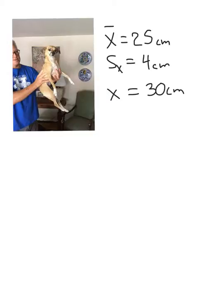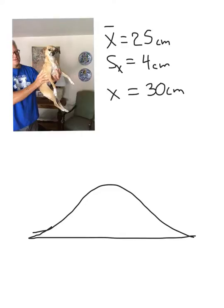Okay, let's take a look at what that looks like. So, let's just assume that this is a normal graph, meaning it's perfectly symmetrical, and where would 25 be? That would be right in the middle. And then one standard deviation on either side is going to be plus or minus 4 centimeters. So, that's going to be 29 to 21 centimeters.